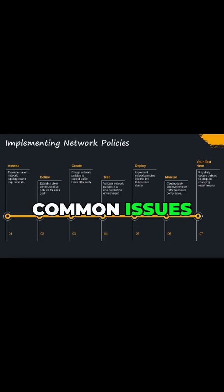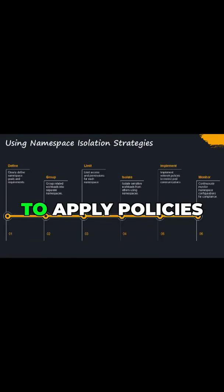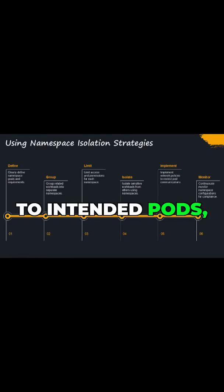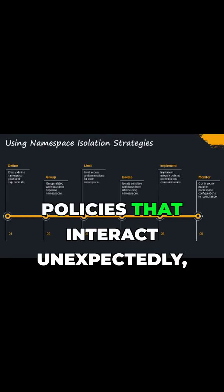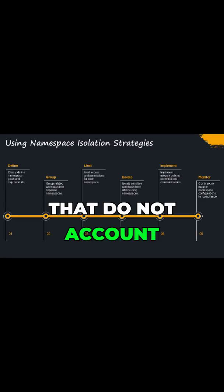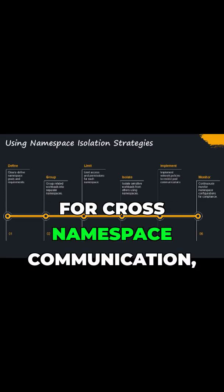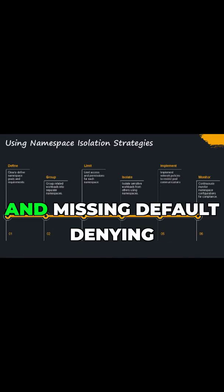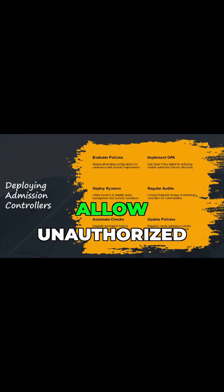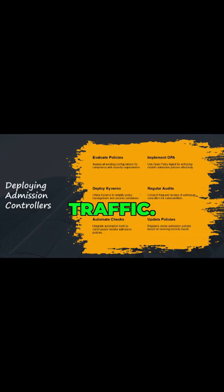Common issues include incorrect selectors that fail to apply policies to intended pods, conflicting policies that interact unexpectedly, namespace limitations that do not account for cross-namespace communication, and missing default-denying policies that implicitly allow unauthorized traffic.